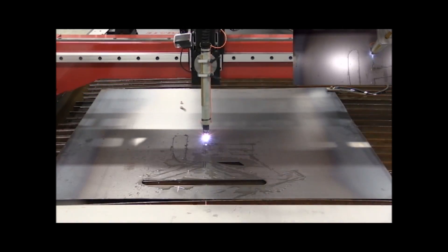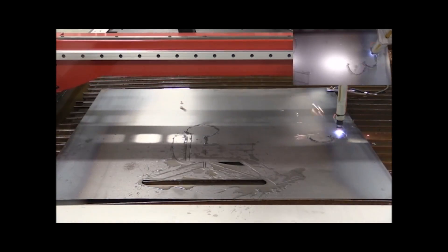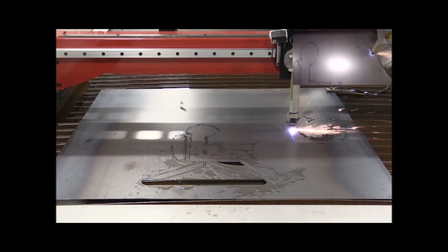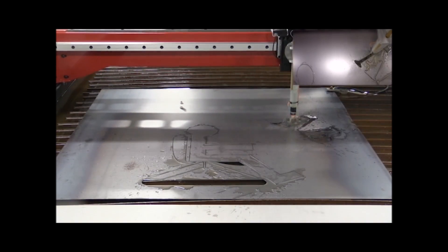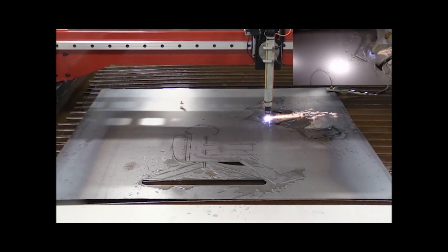This new five foot by ten foot Torchmate plasma table is going to allow us to dramatically increase production. We're going to be able to make parts quicker, more accurately and get a lot more of you outdoors enjoying life again.